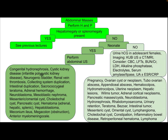In the neonate, the differential diagnosis may include congenital hydronephrosis, cystic kidney disease, infantile polycystic kidney disease, neurogenic bladder, renal vein thrombosis, collecting system duplication, intestinal duplication, sacrococcygeal teratoma, adrenal hemorrhage, neuroblastoma, mesoblastic nephroma, mesenteric and omental cysts, choledochal cyst, pancreatic cyst, hematoma (adrenal, hepatic, splenic), hepatoblastoma, meconium ileus, megacolon, obstruction, and anterior myelomeningocele.